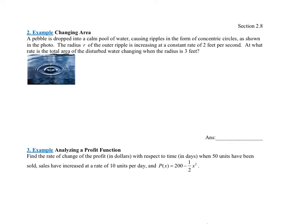We need a formula for area — the area of a circle. The formula is A = πr², so our governing equation is A = πr². What else is given? When r equals 3, that's given. The radius is increasing at a positive rate of 2 feet per second, so r' equals positive 2. We're given r = 3 and r' = 2.